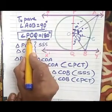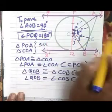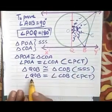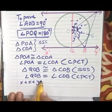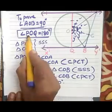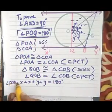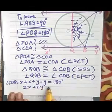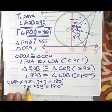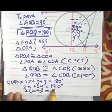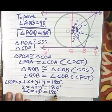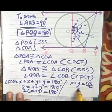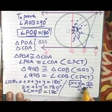Angle POQ equals 180 degrees. This angle POQ is divided into four parts: X degrees, X degrees, Y degrees, Y degrees. Adding all these: X plus X plus Y plus Y equals 180 degrees, because angle POQ equals 180 degrees. That is, 2X plus 2Y equals 180 degrees. Taking 2 as a common factor: 2 into (X plus Y) equals 180 degrees. Therefore X plus Y equals 90 degrees.